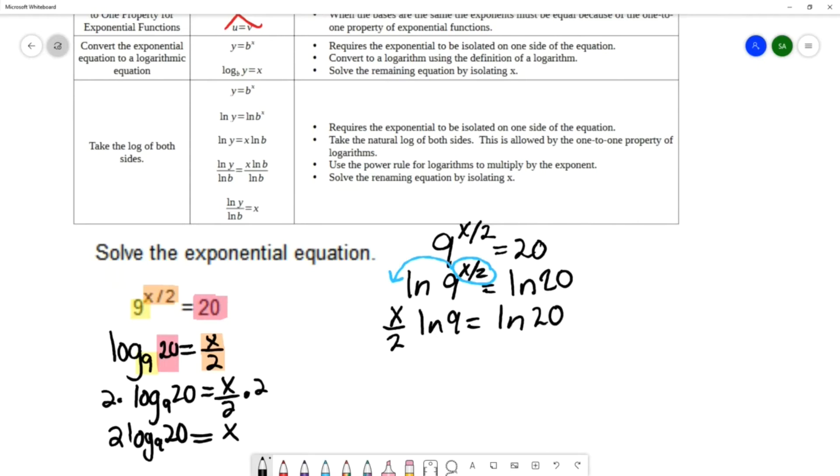And then I can solve this by getting x by itself. So to get that x by itself, I've got to get rid of this 2 which is divided and this natural log of 9 which is multiplied. So what I can do is I can multiply by the reciprocal—I can multiply by 2 over natural log of 9.